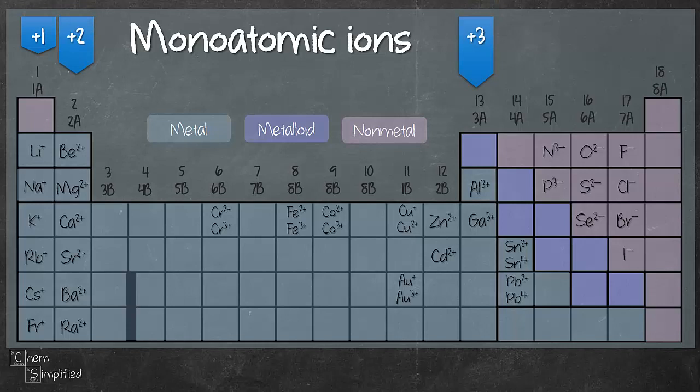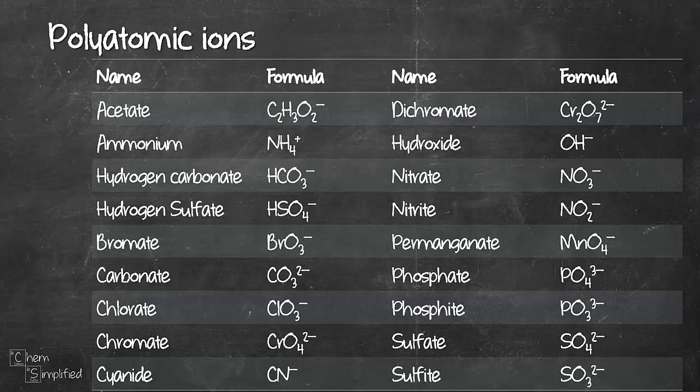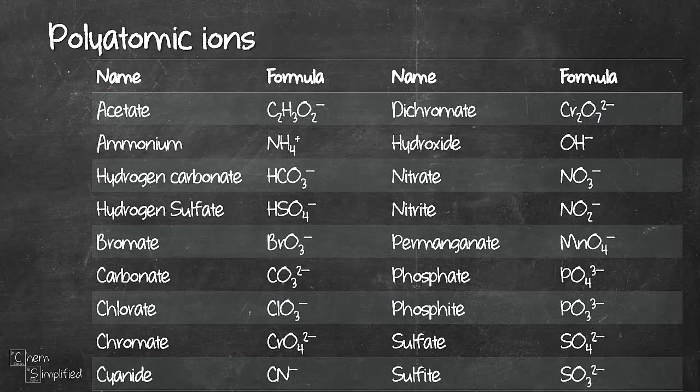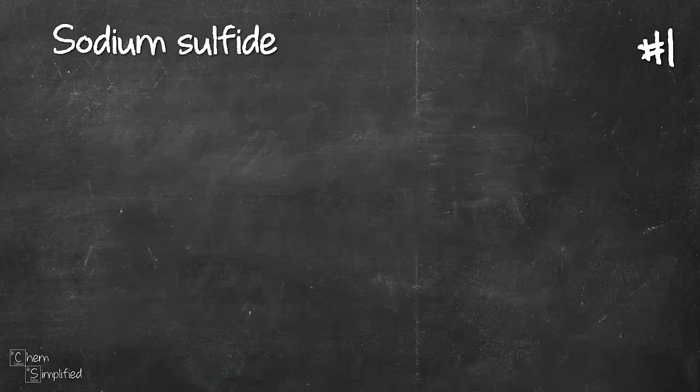And group 5A elements form anions, specifically -3 charge, group 6 negative 2, and group 7 negative 1. Here are some of the commonly used polyatomic ions. Most of them are negatively charged except for ammonium which is NH4+. Like I've mentioned at the beginning, we are going to use the crossover method.